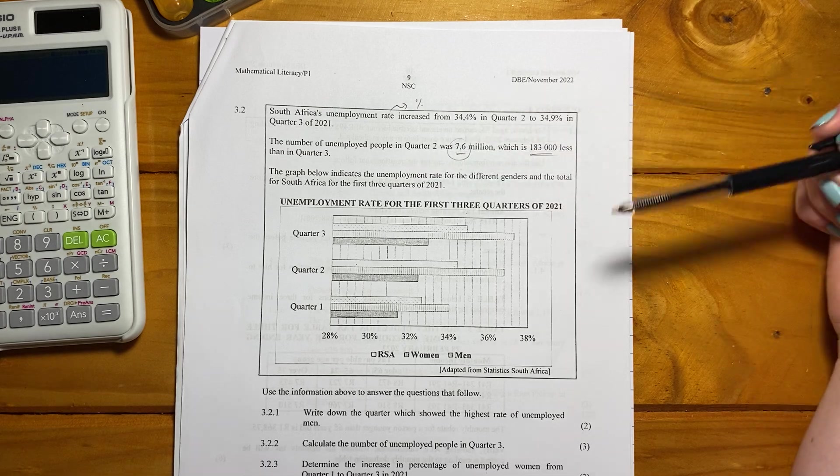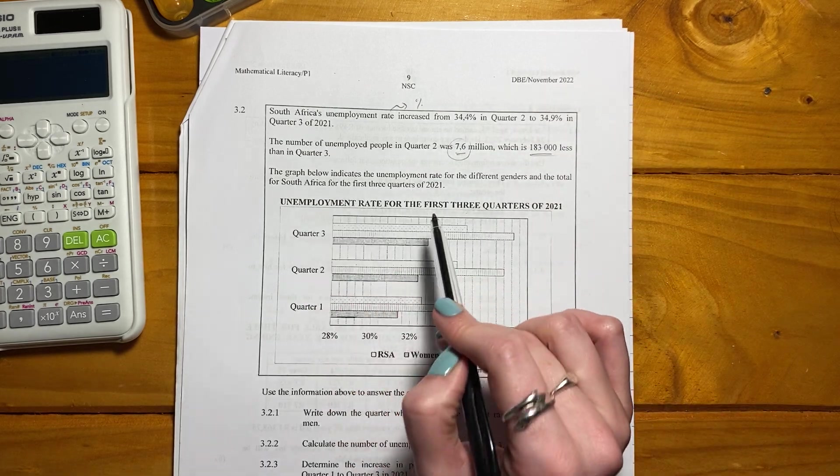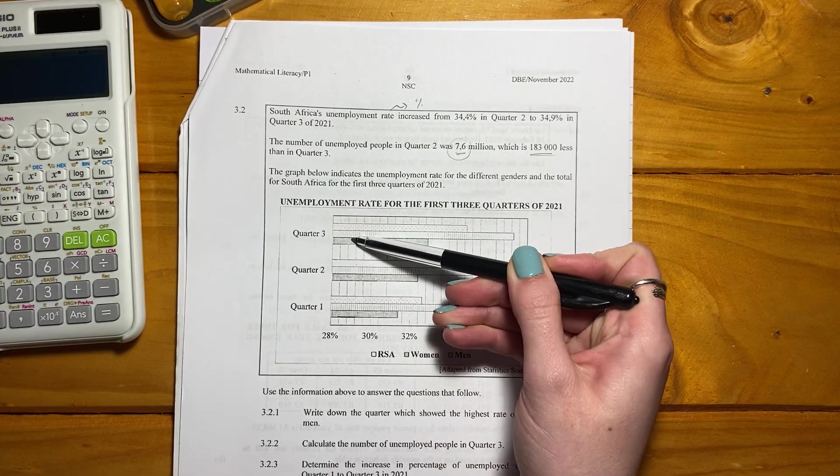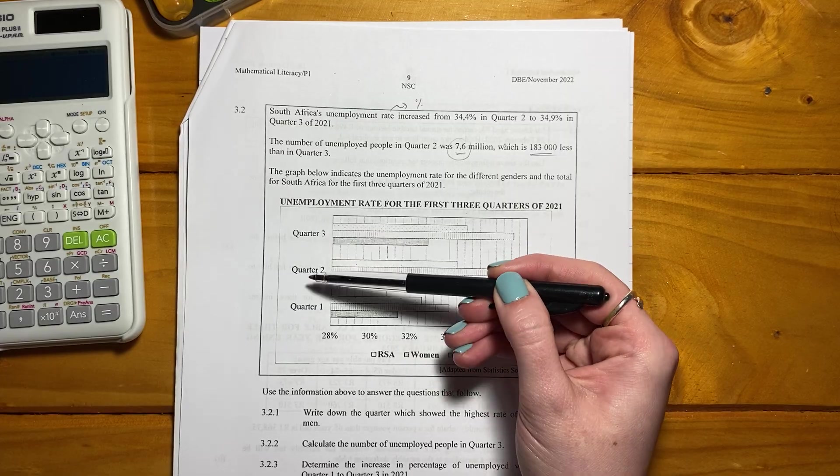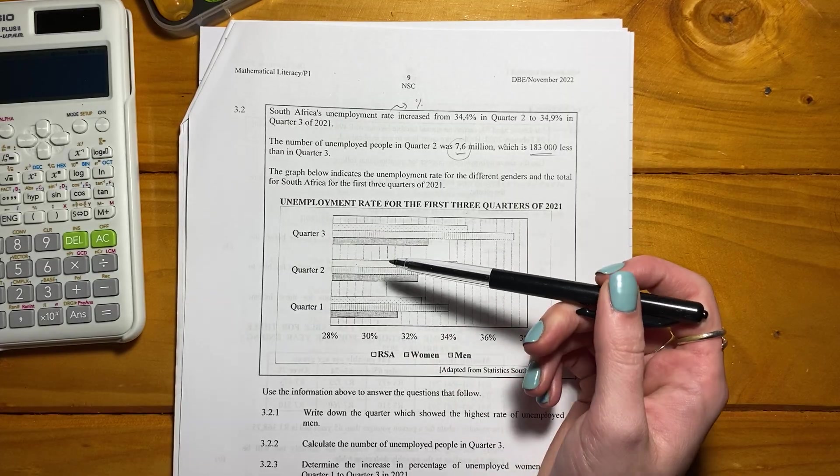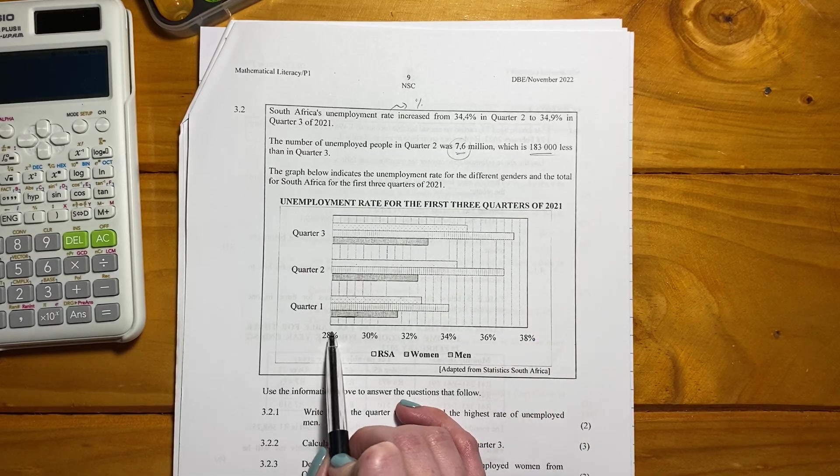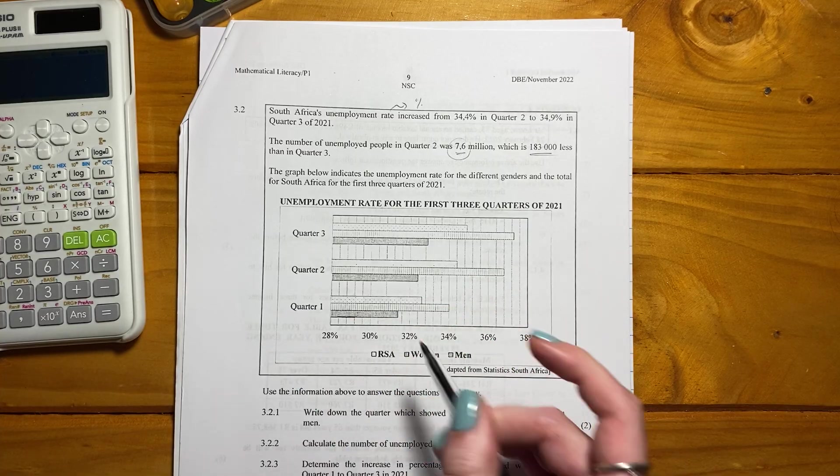The graph below indicates the unemployment rate for the different genders and the total for South Africa for the first three quarters of 2021. So be careful here, what they've done is quarter 1, quarter 2, and quarter 3. Some students sometimes make the mistake, so just make sure that you're reading this correctly. Then look at the scale here - this is not 0, it starts at 28 and goes to 38, so just be careful when you're reading this.